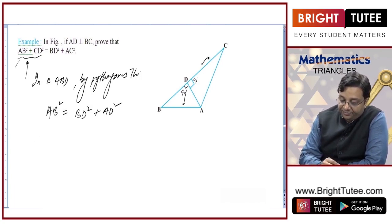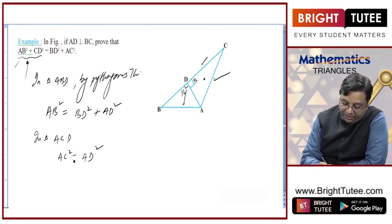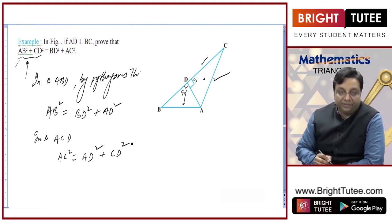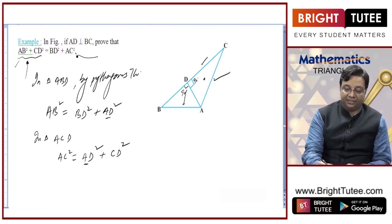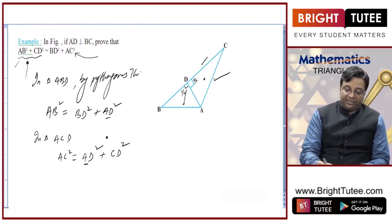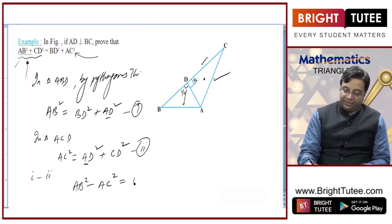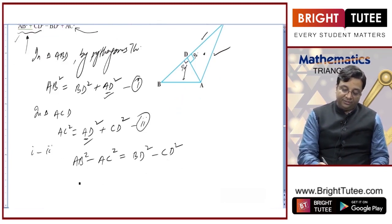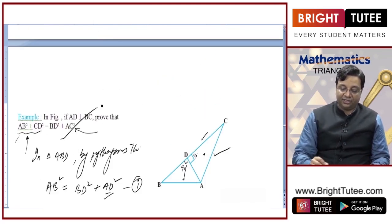To obtain CD, use triangle ACD where AC is the hypotenuse, giving AC² = AD² + CD². Since AD does not appear in the expression to be proved, subtract the second equation from the first: AB² − AC² = BD² − CD². Bringing CD² to the left gives AB² + CD² = BD² + AC². Hence proved.